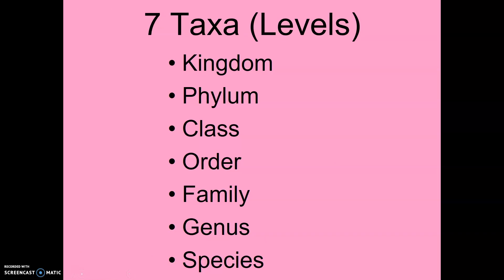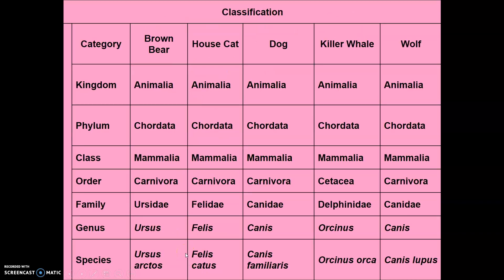There are seven taxa levels, and they go from the broadest to the most specific: kingdom, phylum, class, order, family, genus, and species — and you will need to know these in order. A good way to remember this is 'King Philip came over from Great Spain.' You might want to write that down. Or you can do 'King Philip came over for Great Spaghetti' — however you'd like to remember it.